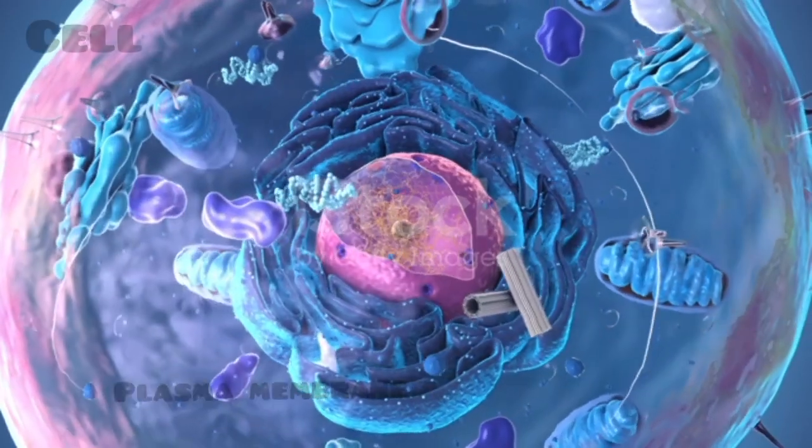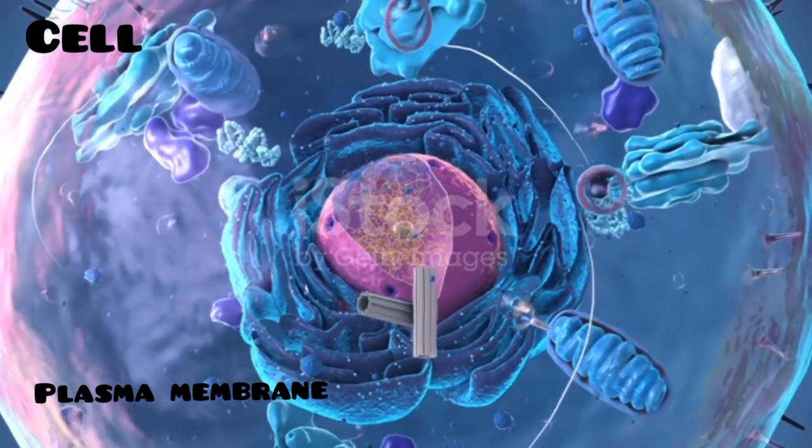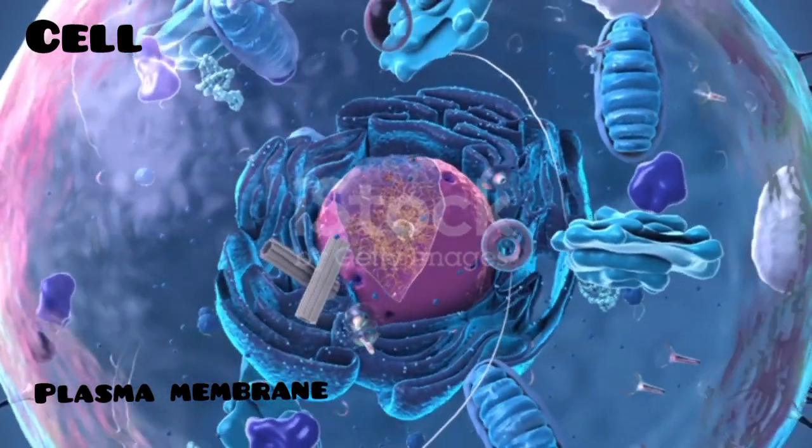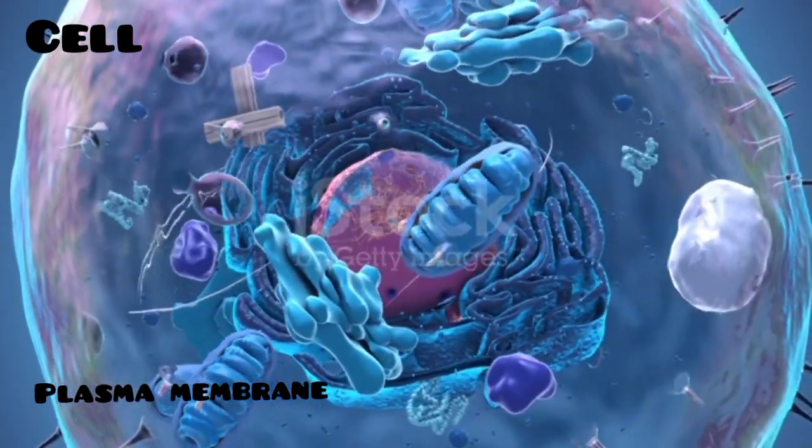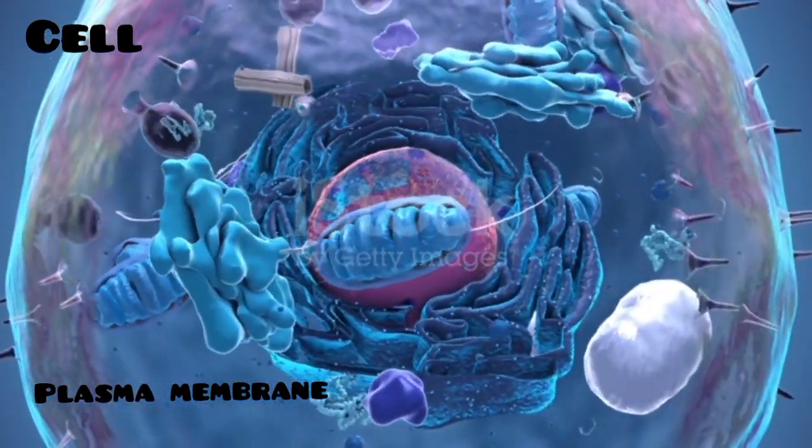The plasma membrane's structure and function are crucial for maintaining the integrity of the cell and allowing it to interact with its environment, enabling essential processes for cell survival and function.